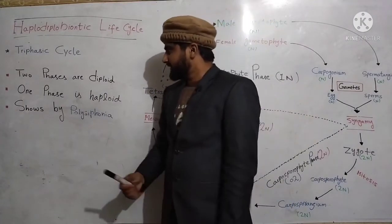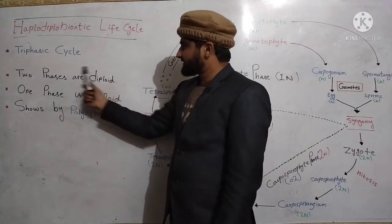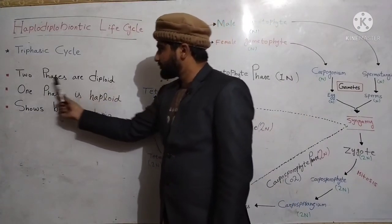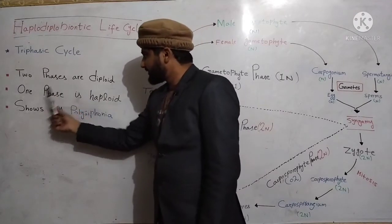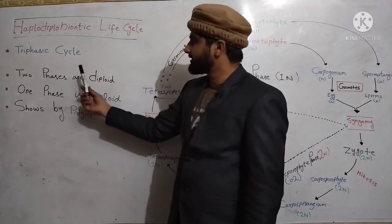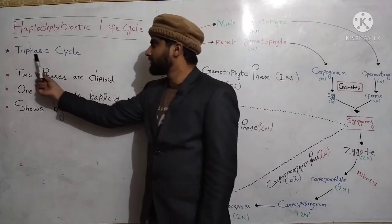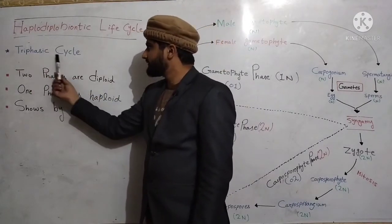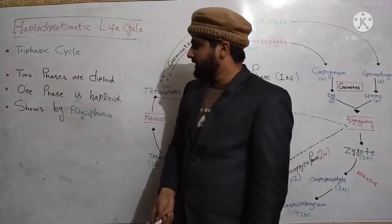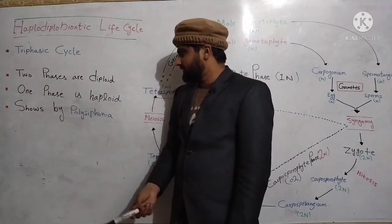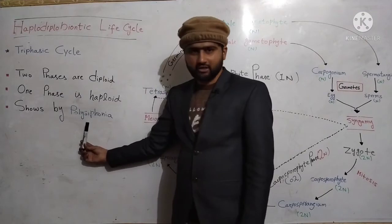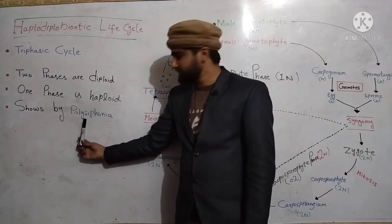In this life cycle, total phases are three, in which two are diploid and one is haploid. So it is also known as a triphasic life cycle, and this life cycle is shown by Polysiphonia.